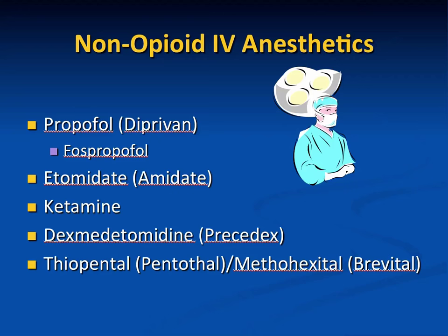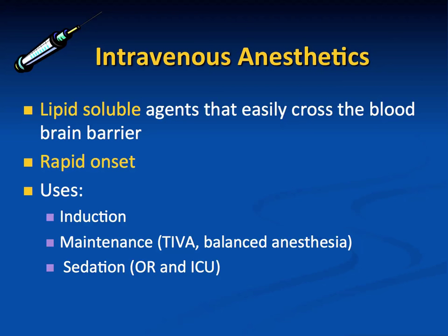These intravenous anesthetics are very lipid-soluble agents that easily cross the blood-brain barrier. They have a rapid onset — in fact, one pass from the intravenous injection site to the brain takes approximately 30 seconds. We use them to induce general anesthesia, maintain anesthesia such as in total intravenous anesthesia with propofol, sometimes combined with remifentanil or other drugs, and in sedation techniques in both the operating room and the ICU.